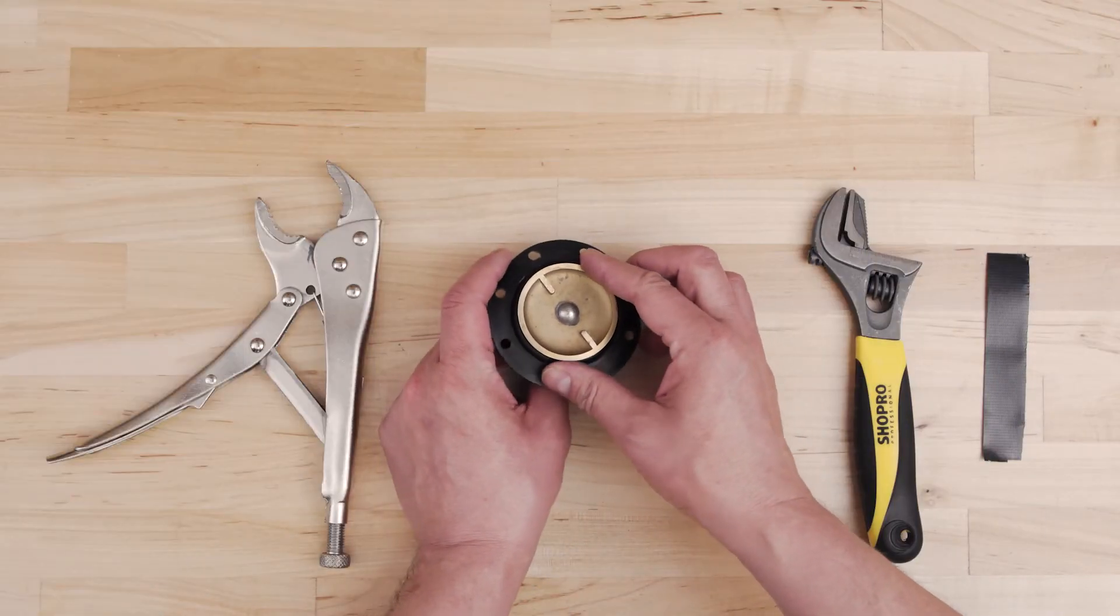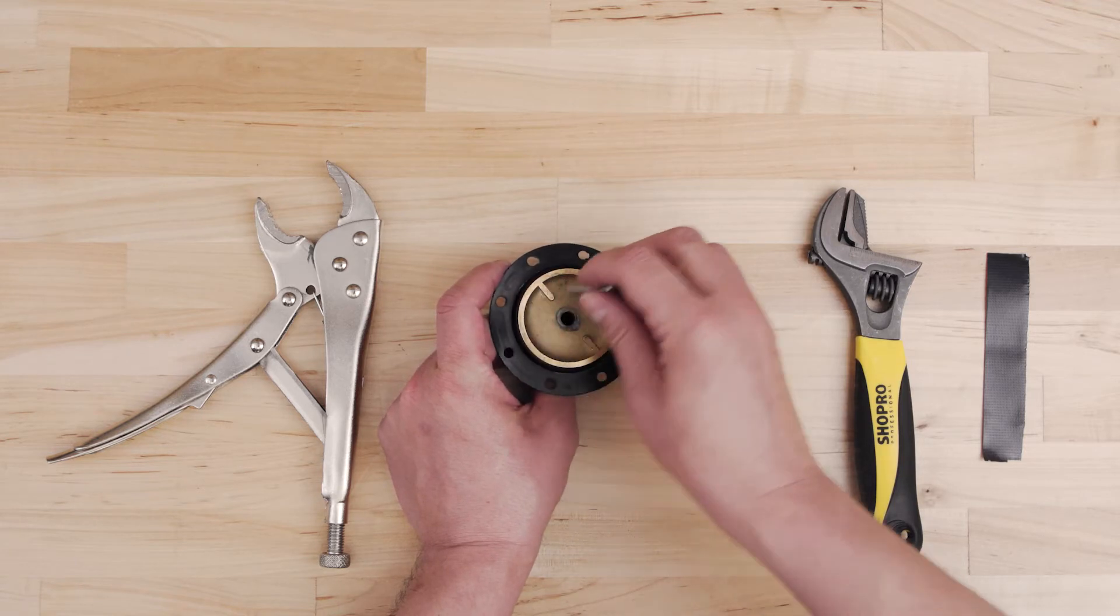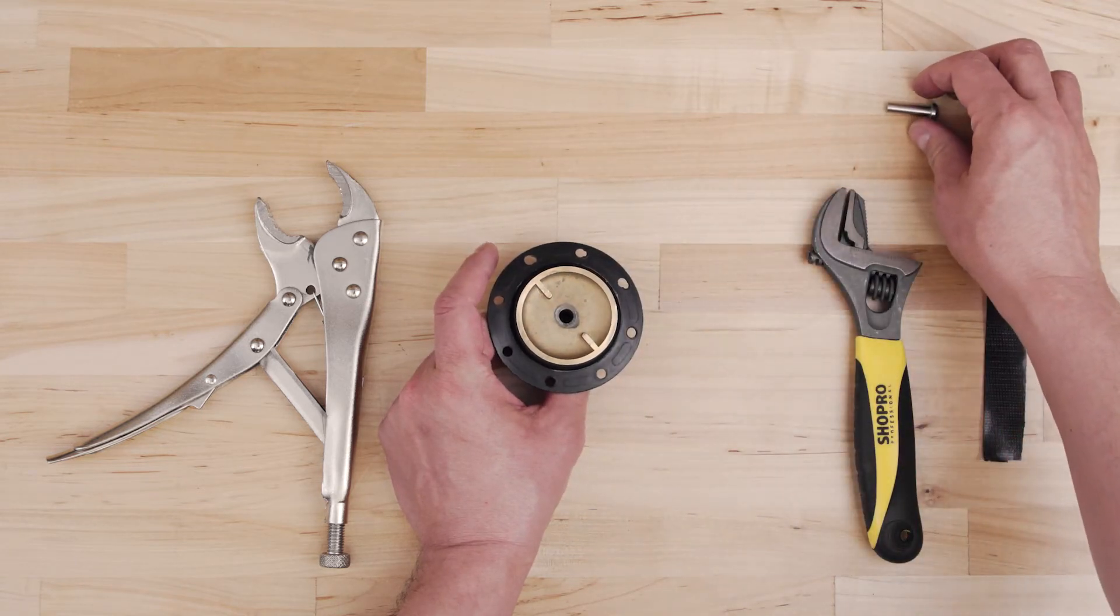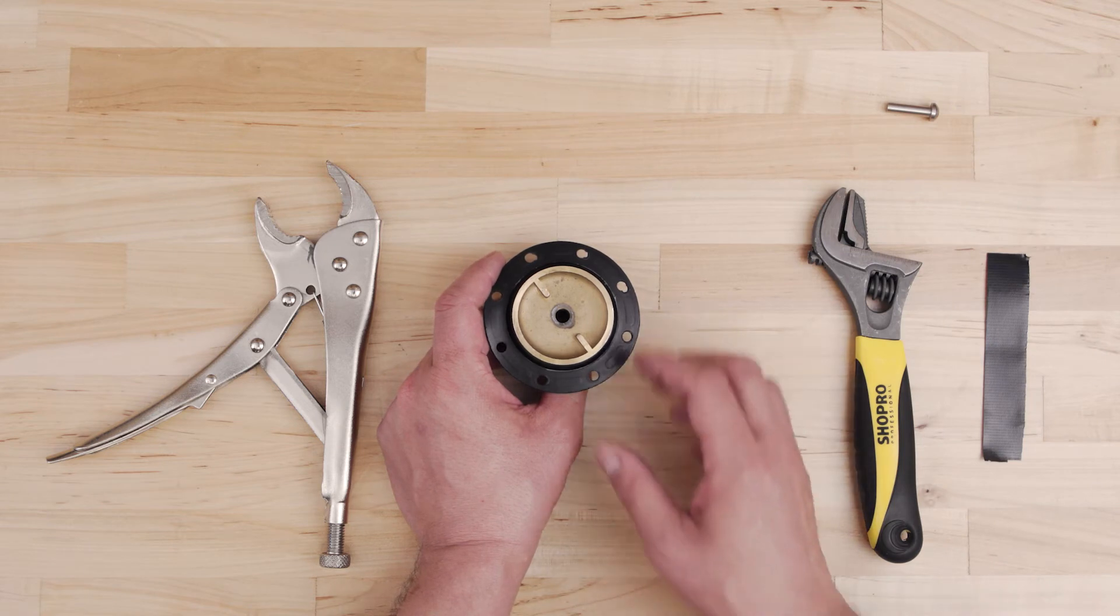To replace the diaphragm, you'll have to separate it from the guide assembly. First, remove the poppet pin and set it aside. Since the assembly is threaded together, it might be a little tricky to unscrew.